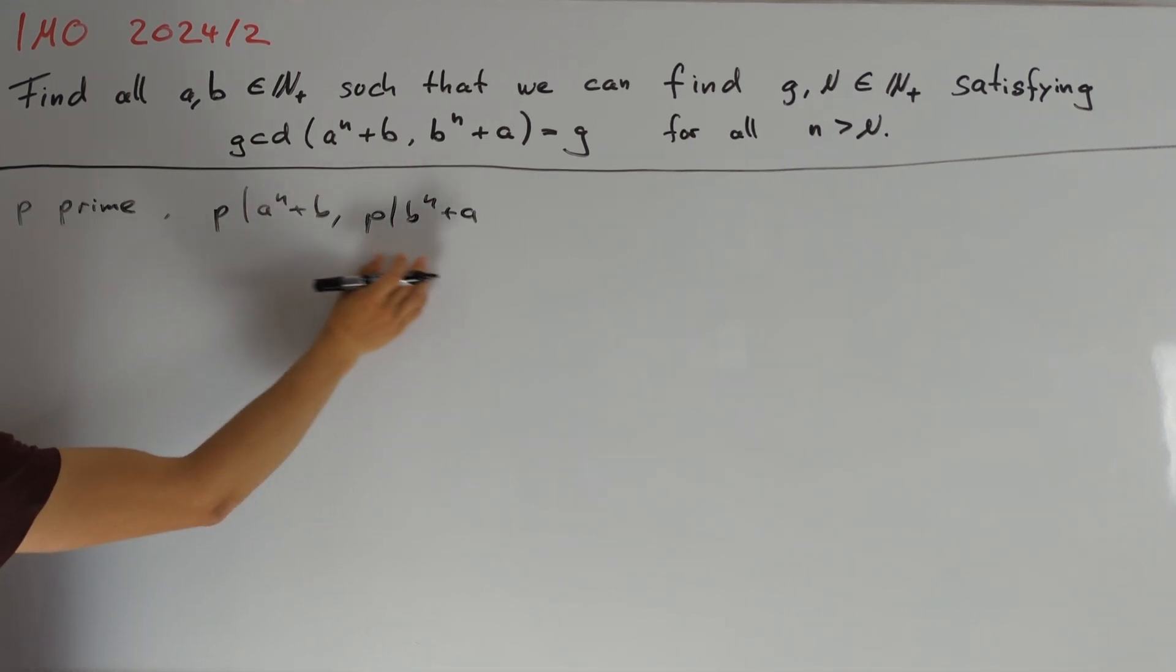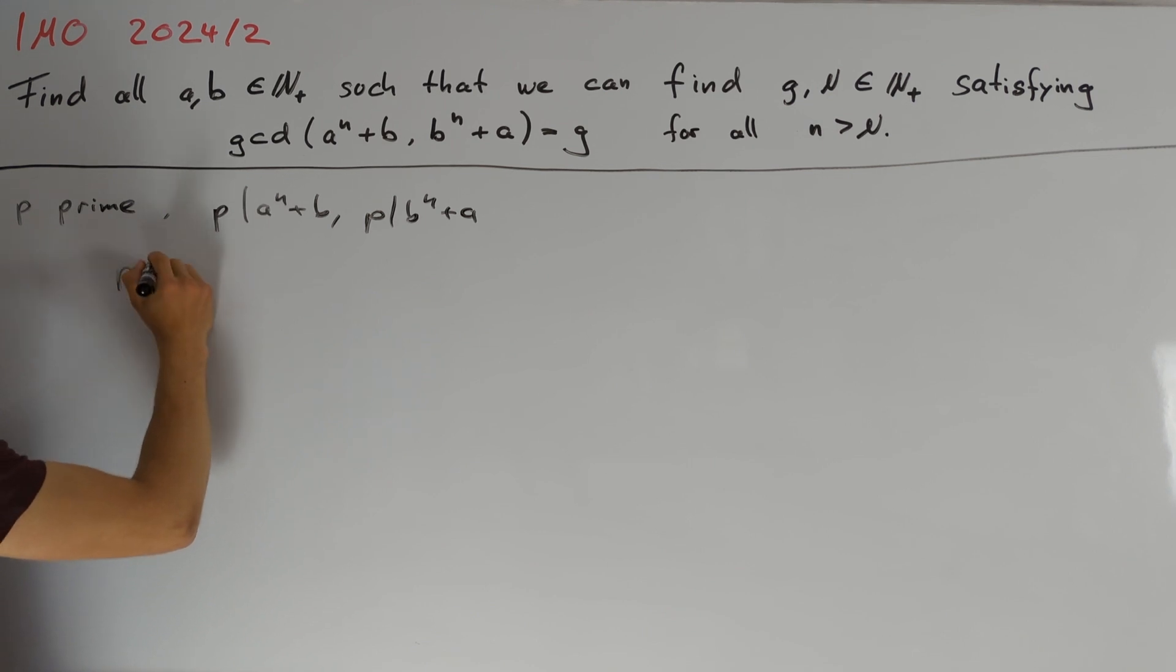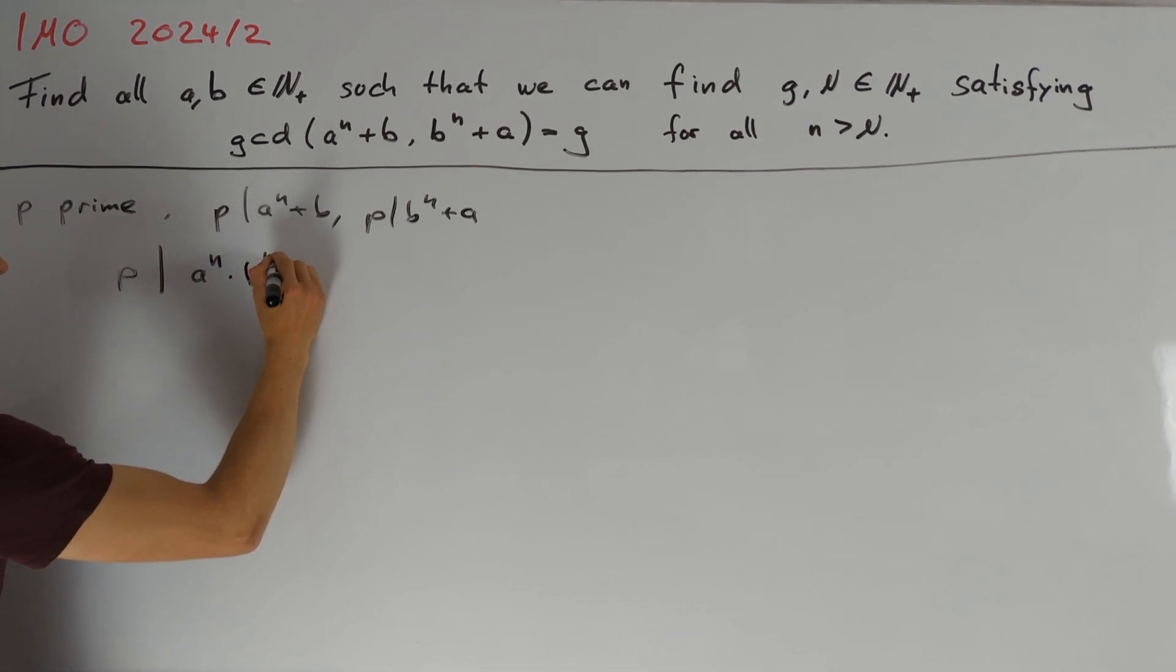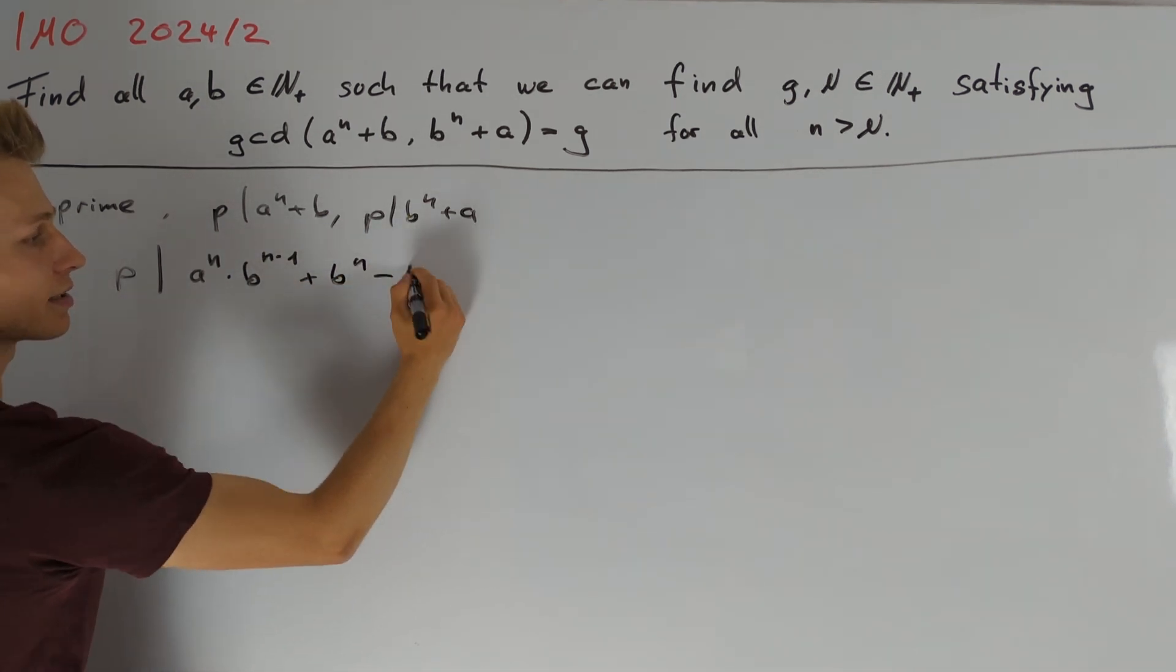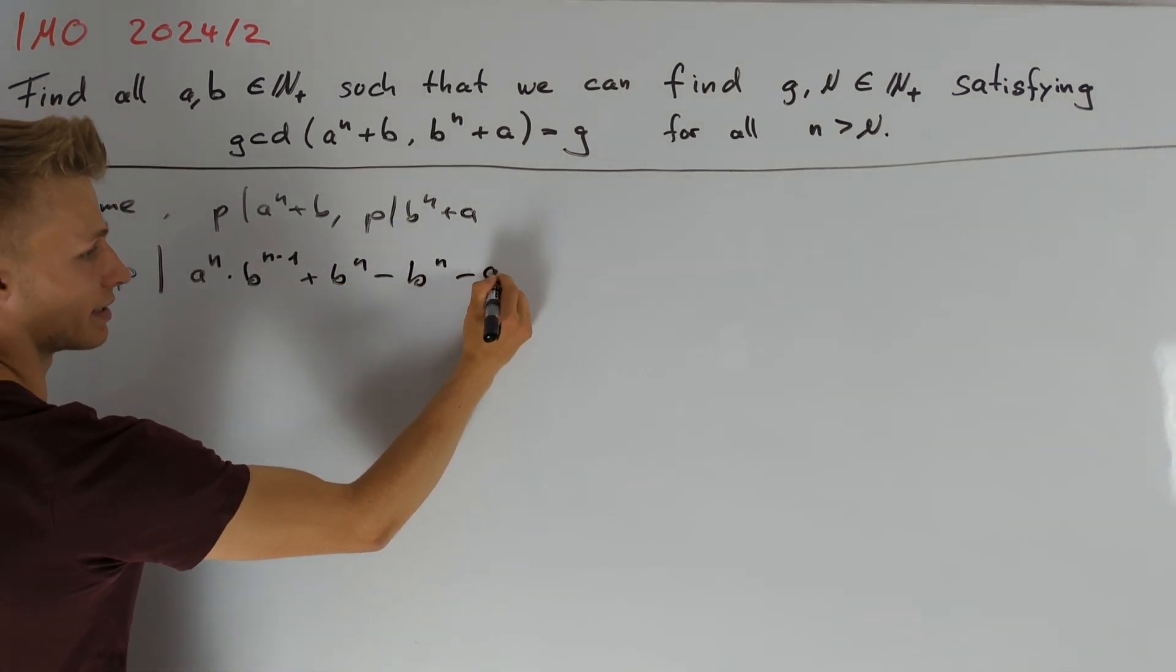by multiplying this first right hand side here by b to the power of n minus 1 because then we have b to the power of n in both terms. Subtracting those expressions implies that p also divides a to the power of n times b to the power of n minus 1 plus b to the power of n minus b to the power of n minus a.